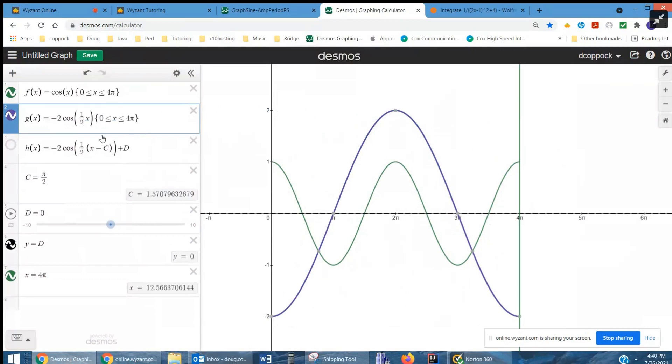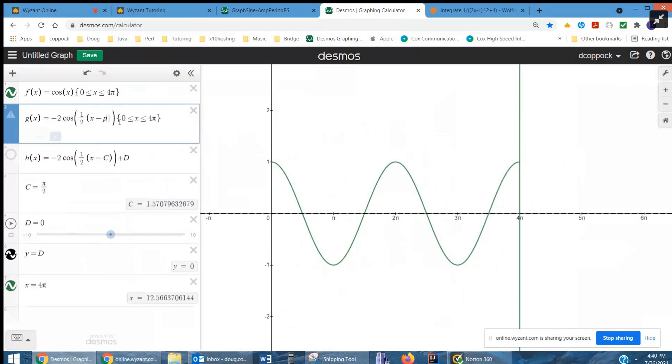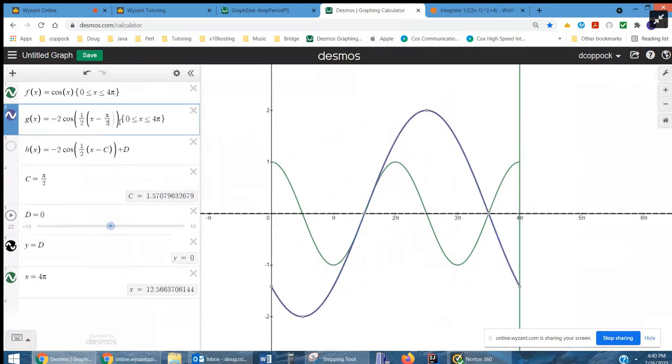Now if I put parentheses around this x and then put a minus π/2, it actually moves the graph to the right by π/2 units. So when this number is negative, the shift is to the right. When it's positive, it moves it to the left. So you can see it happening.